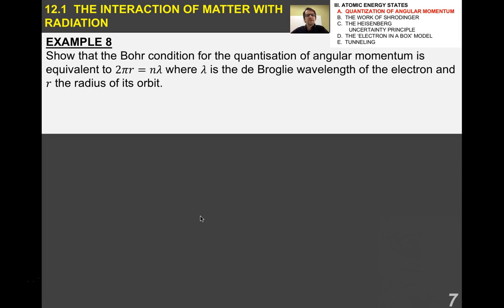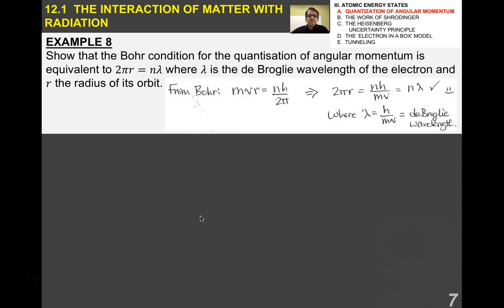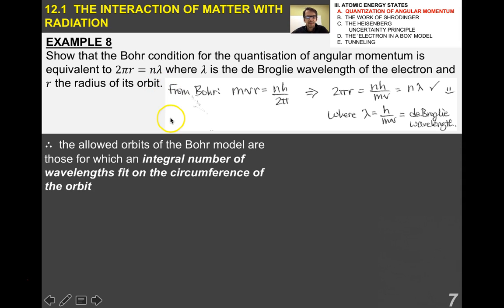As another example, show that the Bohr condition for the quantization of angular momentum — MVR — is equivalent to 2πR equals N times lambda, where lambda is the de Broglie wavelength for the electron and R is the radius of its orbit. All you do is quantify angular momentum as the integer multiple of h over 2π, show that lambda equals H over MV, and you arrive at this condition. Therefore, the allowed orbits of the Bohr model are those for which an integral number of wavelengths fit on the circumference of the orbit.